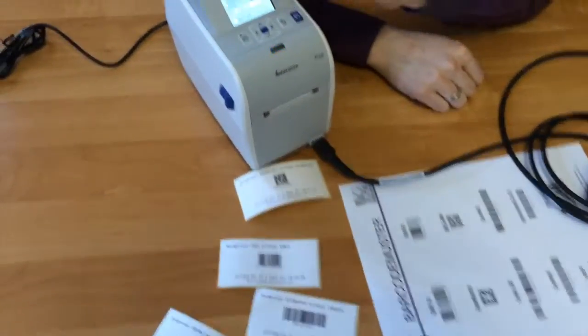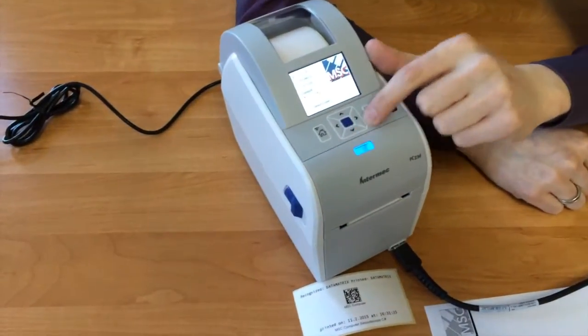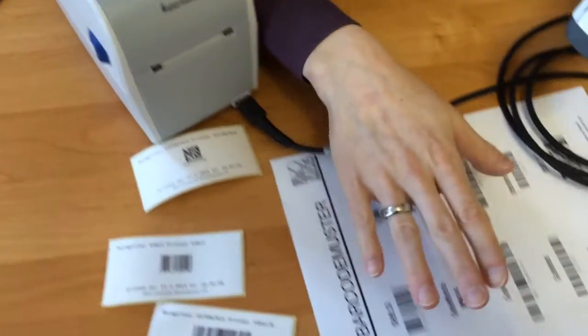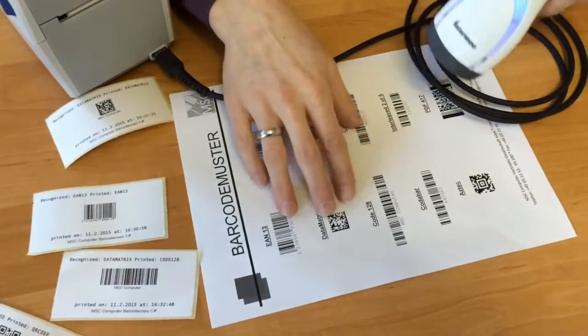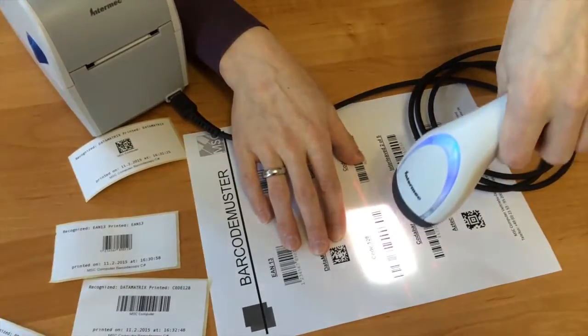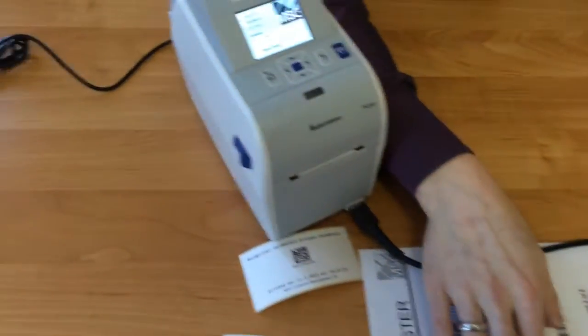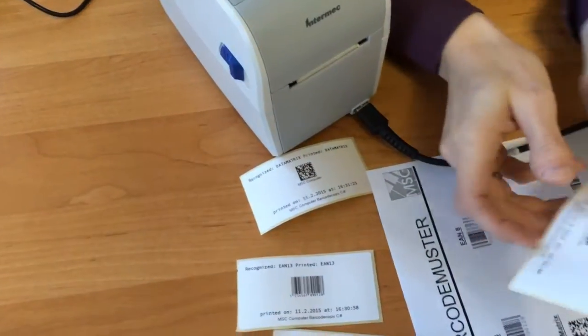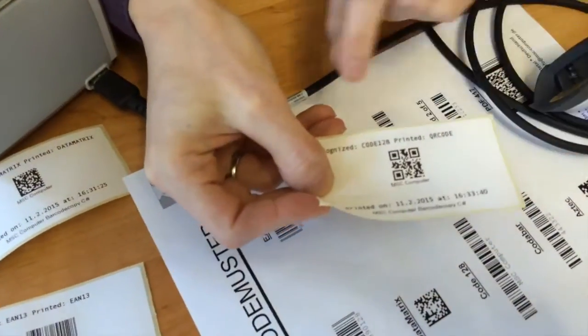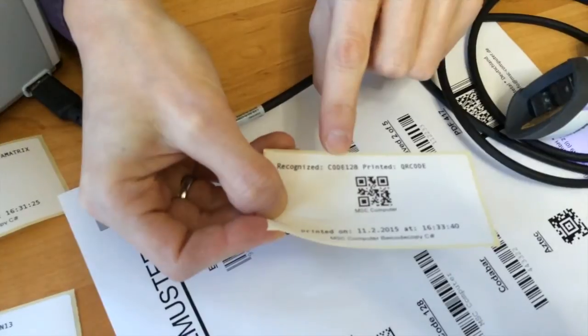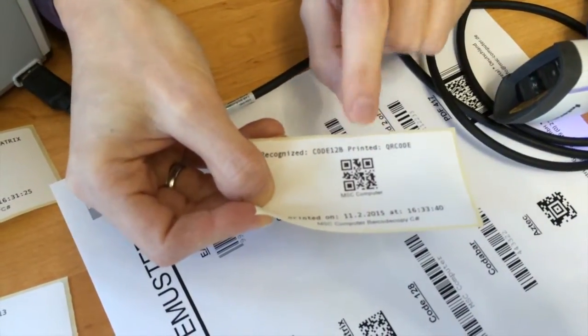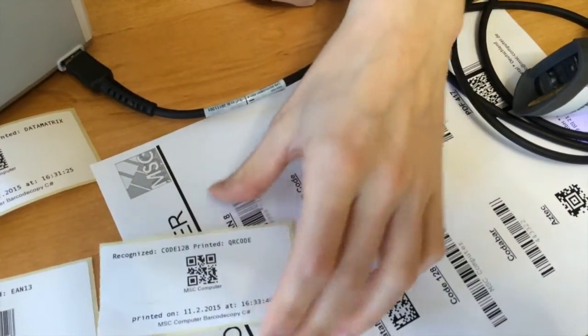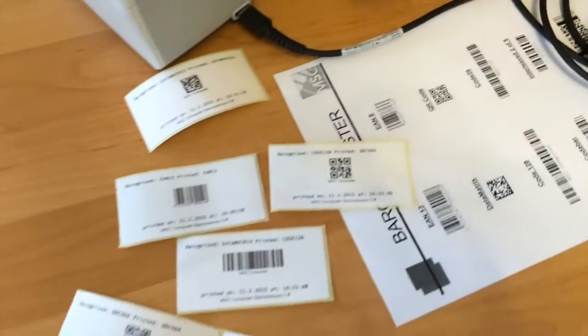You can also do the other way around. Maybe you want to have a QR code instead of a Code 128. What I'm going to do now is read the Code 128 and print it. What you see here is very simple - we have read Code 128, but we have printed a QR code. You can convert the input of your barcode reader into any kind of barcode you want.